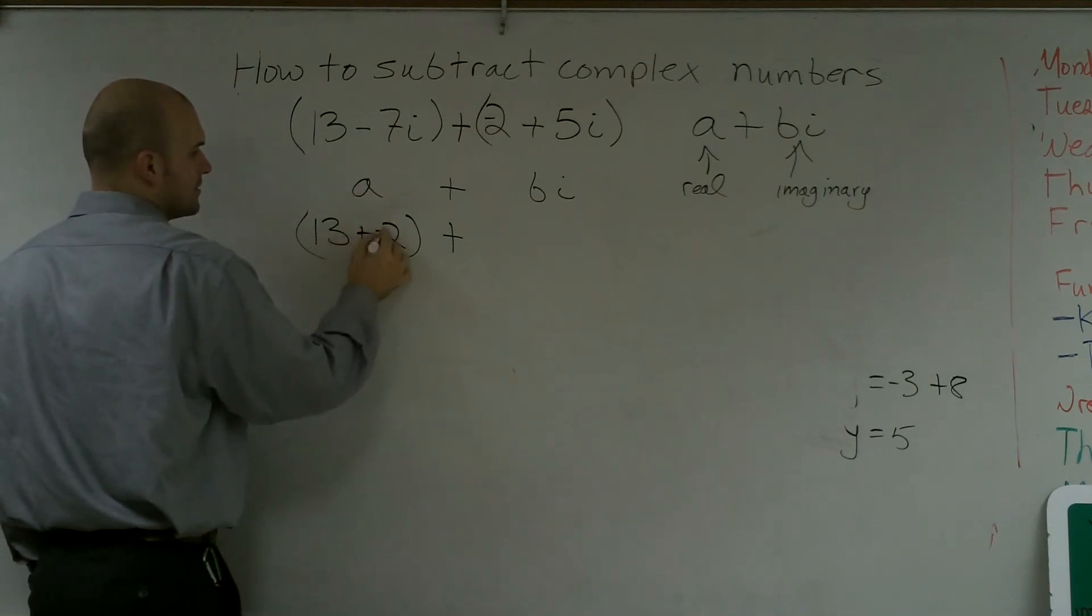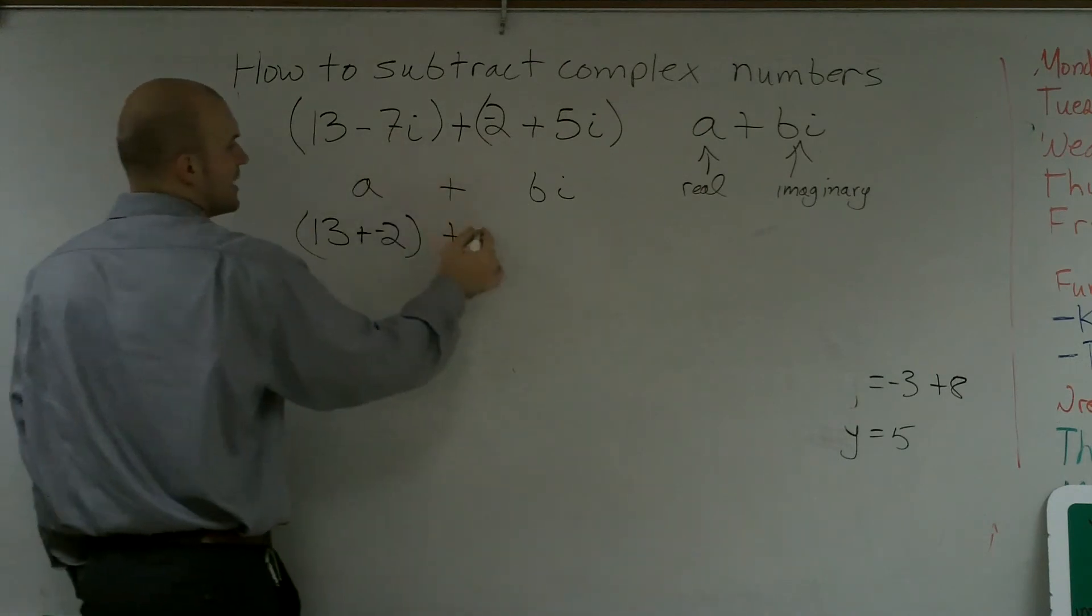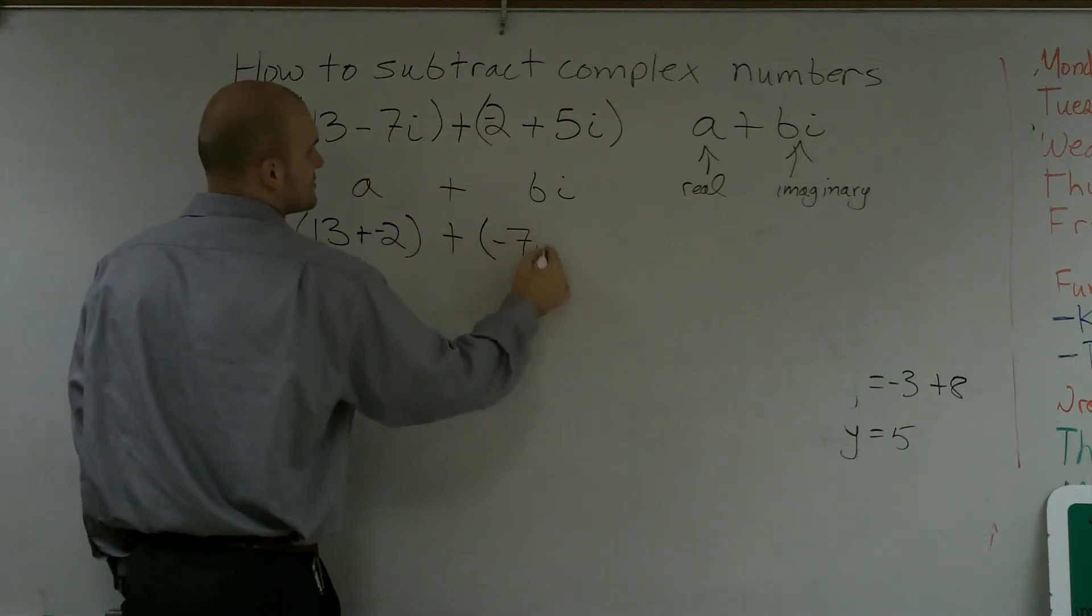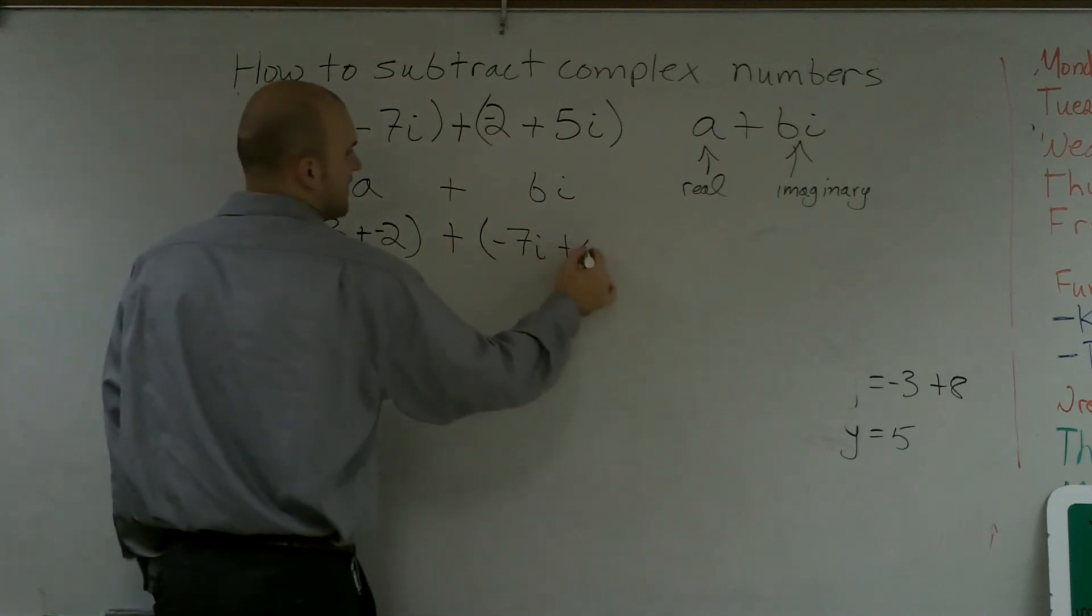I'll just keep it like this: 13 plus negative 2, plus now my negative 7i plus 5i.